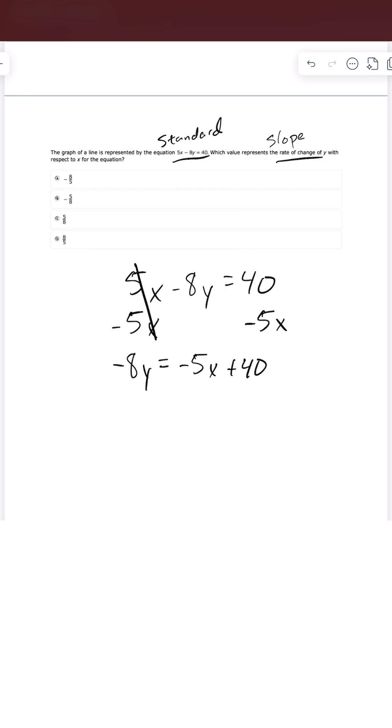So lastly, we've got to get y by itself. So we're going to divide by negative 8. We've got to do that for each term. The negative 8s are going to cancel out and leave us with y is equal to negative 5 over negative 8 is the same thing as just saying positive 5 over 8x. And then 40 divided by negative 8 is negative or minus 5.